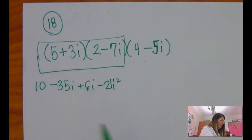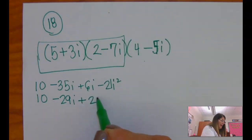That's just this part here. So I've got 10 minus 29i. Now this i squared becomes a negative 1, so it becomes plus 21.